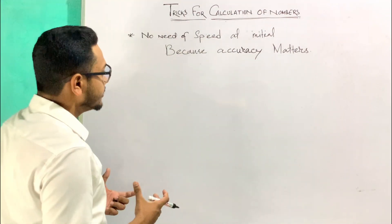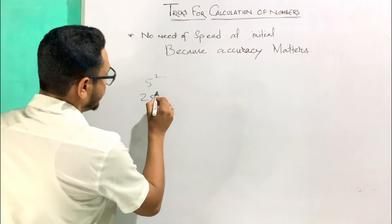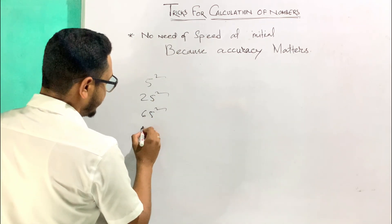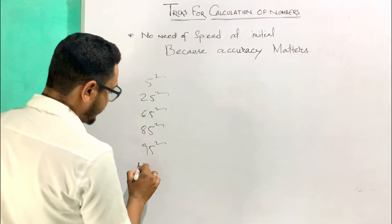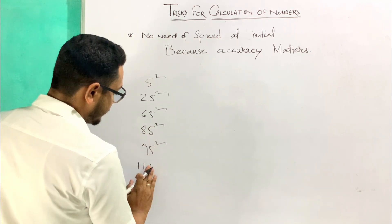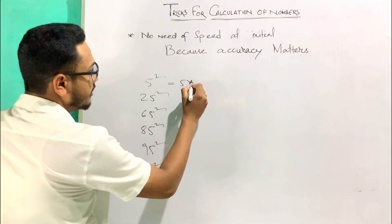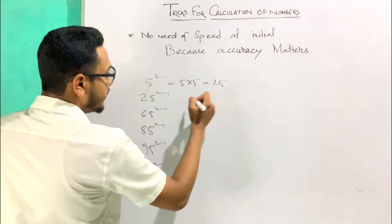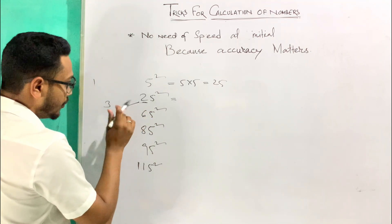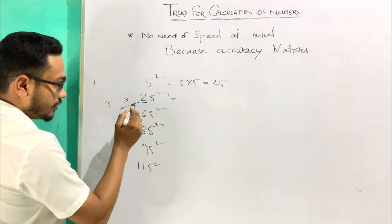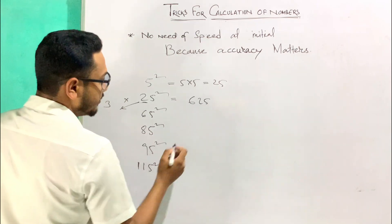There are some numbers ending with 5 that have a square — for example, 5 squared, 25 squared, 65 squared, 85 squared, 95 squared. So how do we solve those? 5 squared means 5 into 5, which gives 25. Now look at the tens digit, which is 2. The successor of 2 is 3, and with that 3 I will multiply: 2 times 3 gives 6.